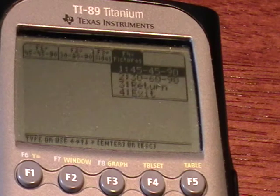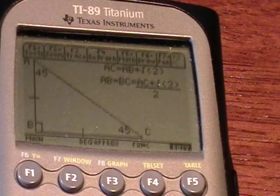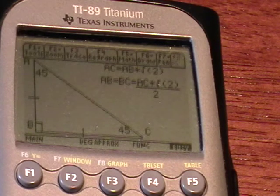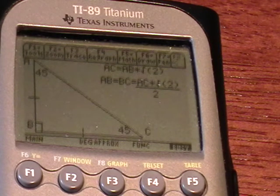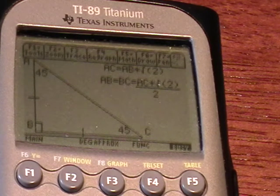You can look at the picture for a 45-45 degree triangle. We know that both sides, or two legs of the triangle, the 45-45-90 triangle, are equal.